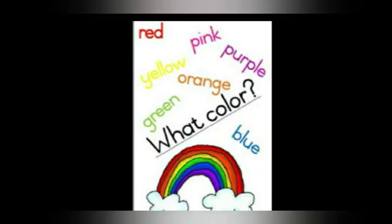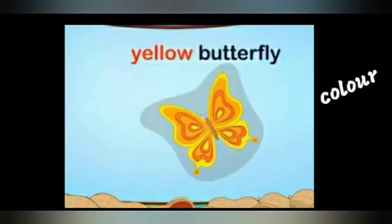Next one — color. What is your favorite color? We can use colors to describe something. Read the color names: red, pink, purple, yellow, orange, green, and blue. Look at this picture — what is the color of the butterfly? Yes, yellow color. Yellow butterfly. Here, yellow is a word we use to describe a butterfly, so yellow is an adjective word.